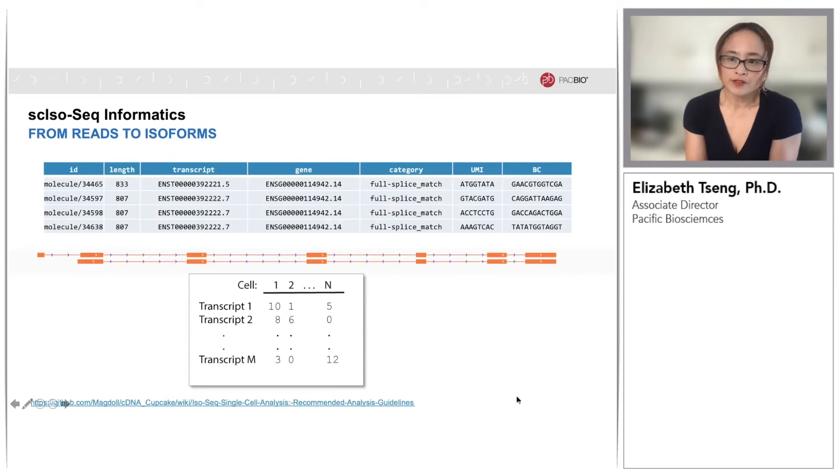After transcript classification and filtering, we now have an isoform count matrix. This matrix can then be carried on for tertiary single-cell analysis. A description of how this workflow is currently carried out is in the URL listed in this slide.